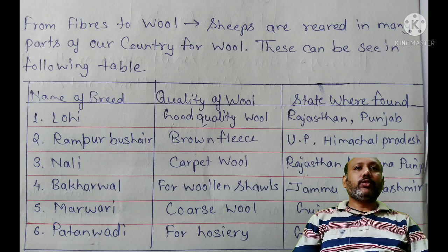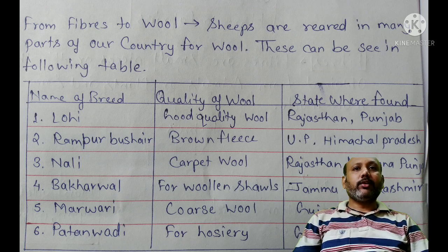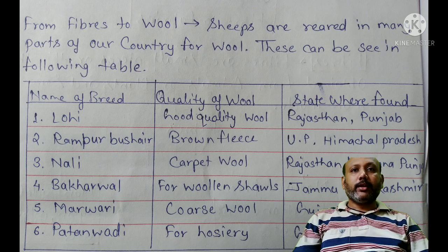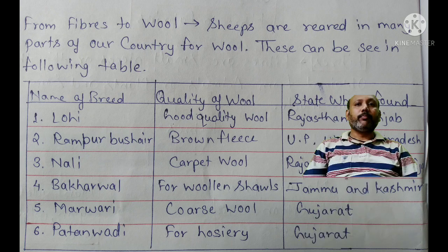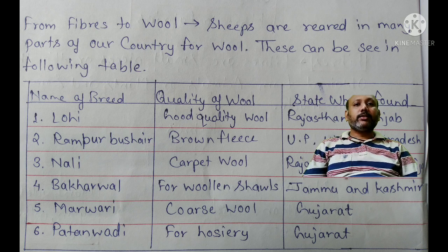Sheep are reared in many parts of our country for wool. The breeds include: Lohi, a good quality wool found in Rajasthan and Punjab; Rampur Bushari, brown fleece in UP and Himachal Pradesh; Nali, carpet wool in Rajasthan, Haryana and Punjab; Bakharwal for woolen shawls in Jammu and Kashmir; Marwadi with Khoras wool in Gujarat; and Patanwadi for Hozari in Gujarat.